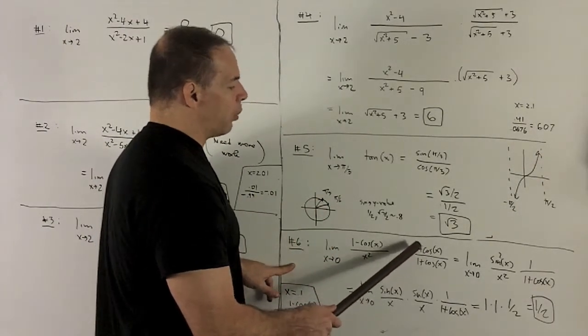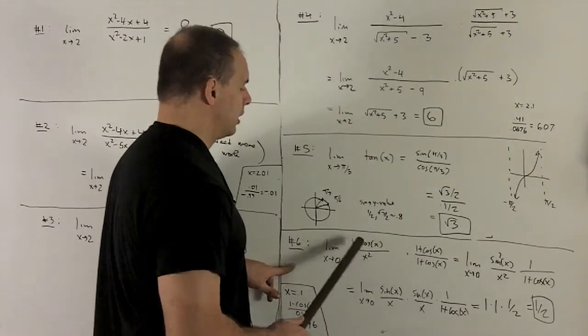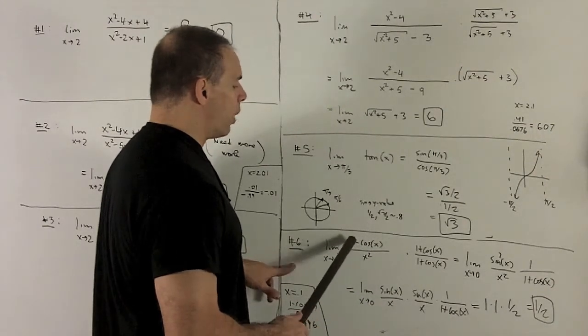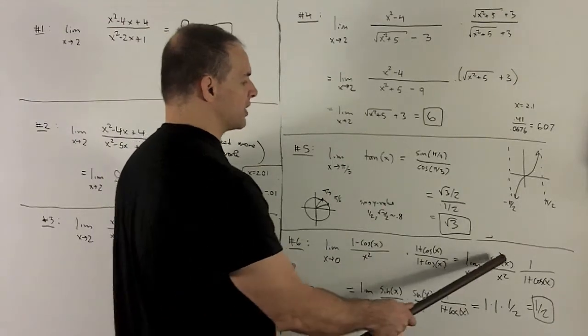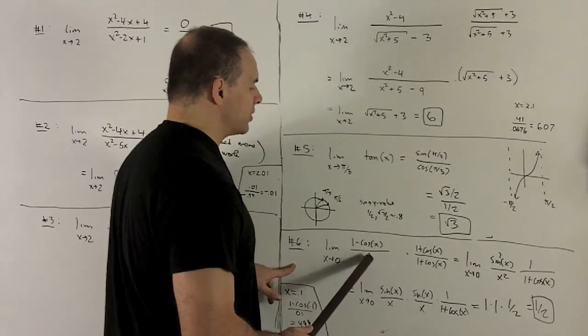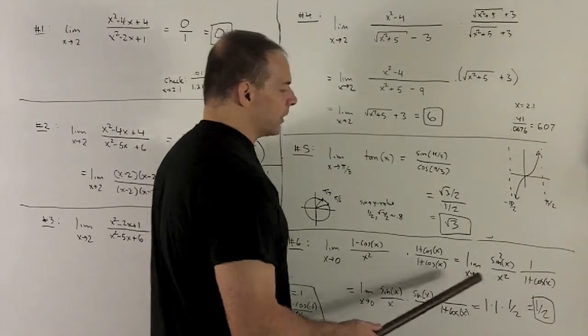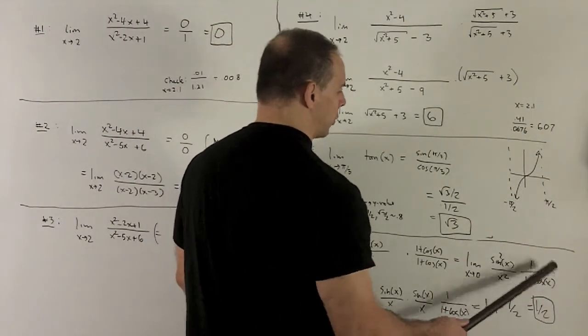So I'll do that. So we multiply top and bottom by one plus cosine x. As promised, when it hits this, we're going to get 1 minus cosine squared x, which is sine squared x. The x squared stays where it is, and then we'll have to deal with a leftover 1 over 1 plus cosine x.